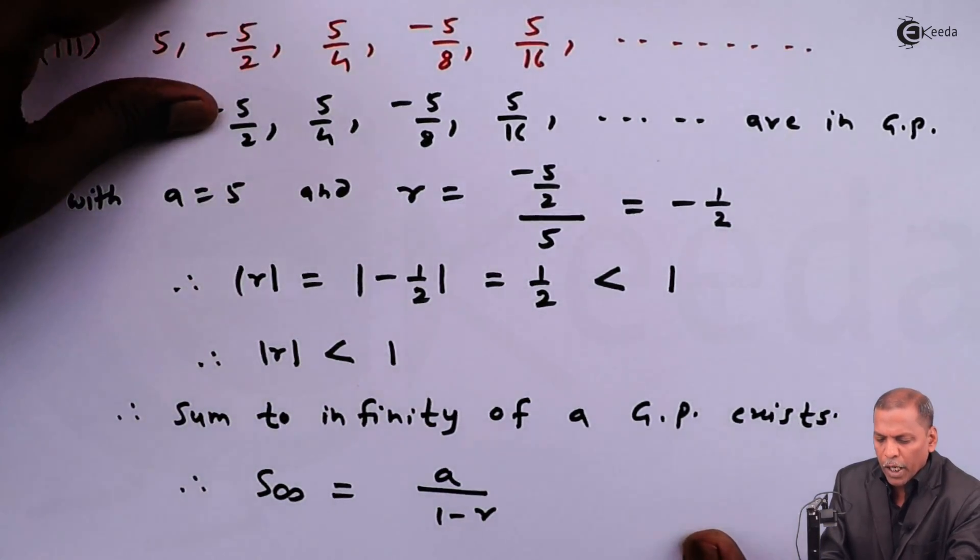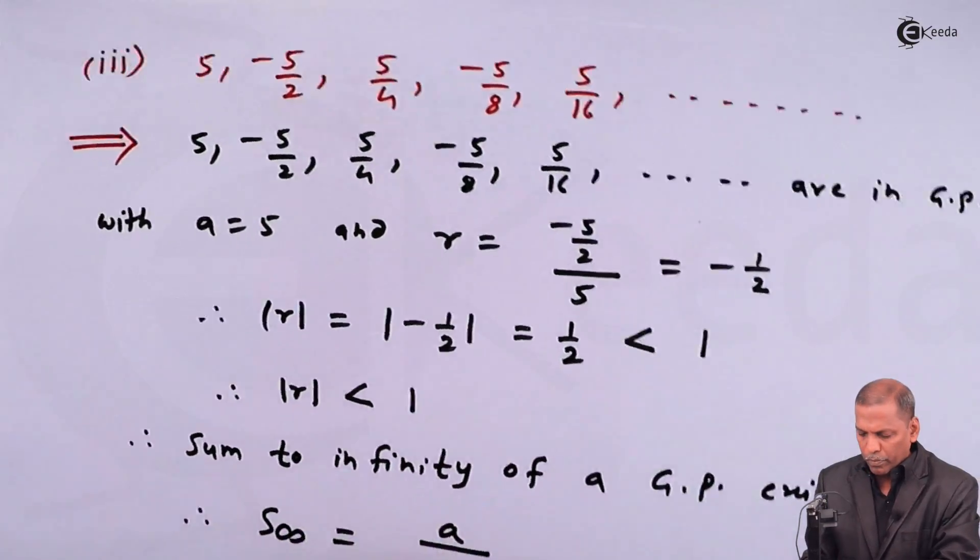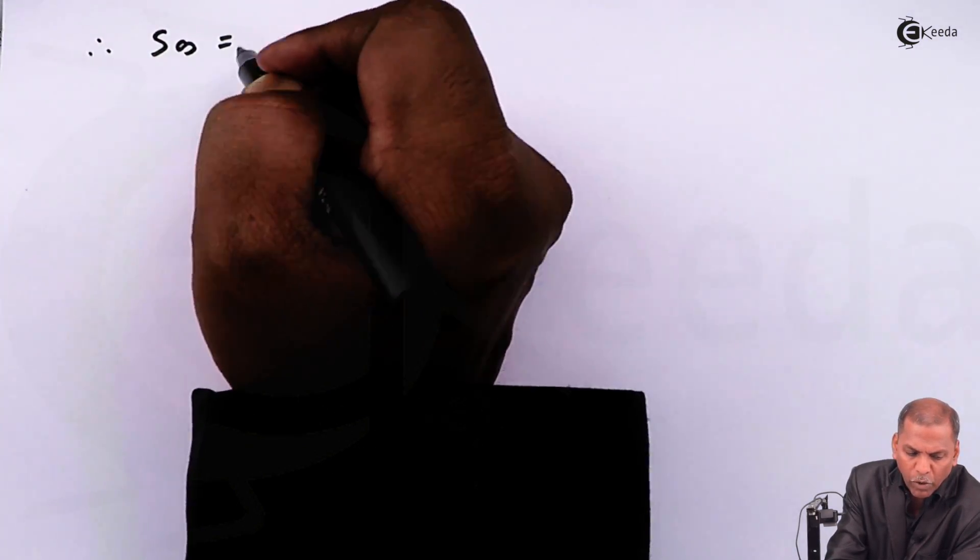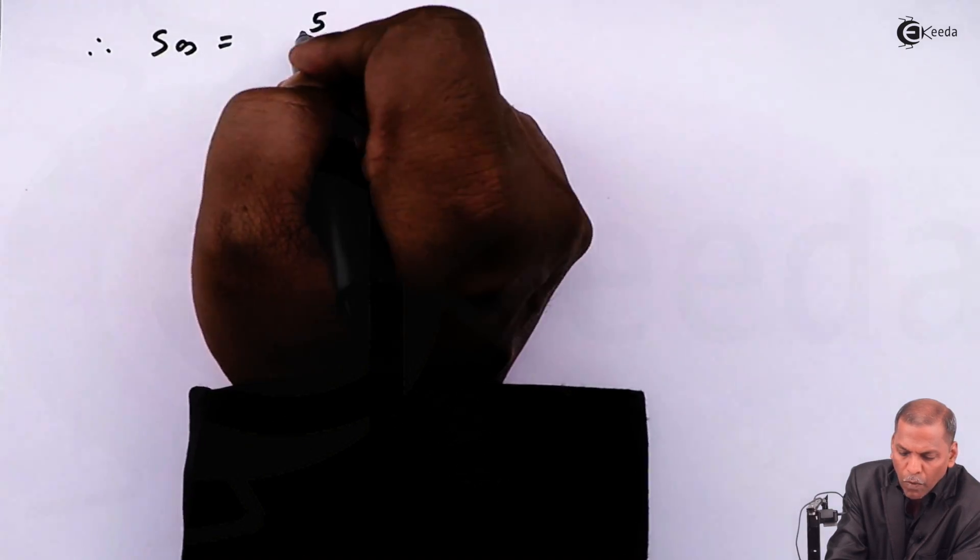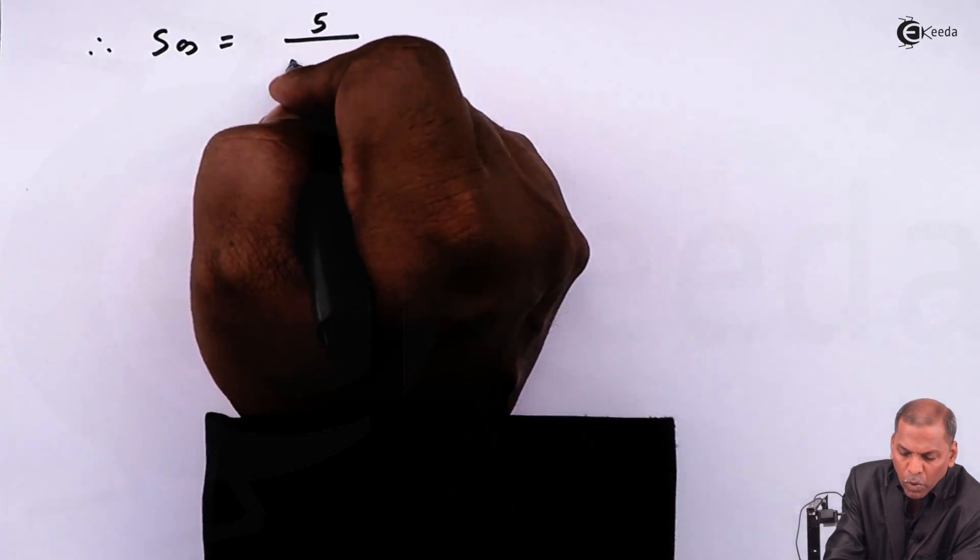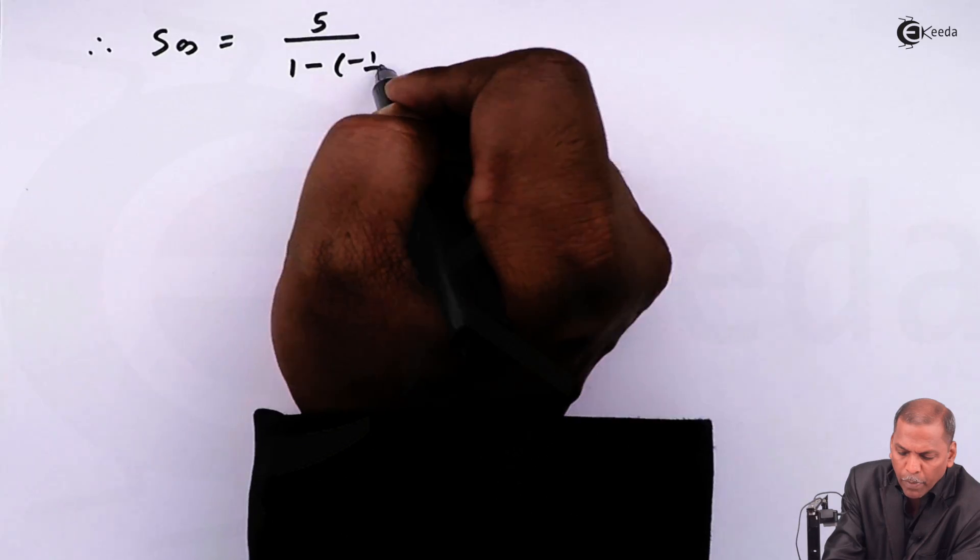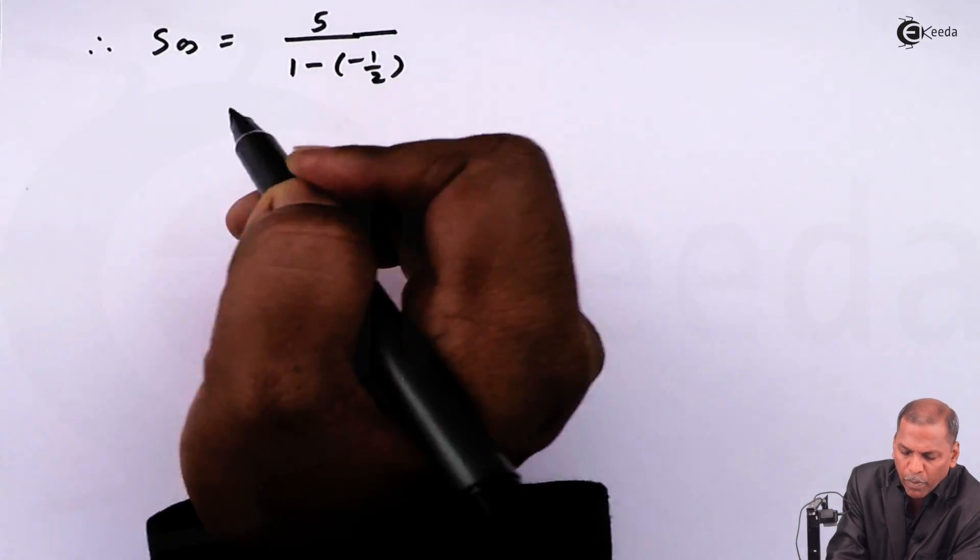Substituting the corresponding values, we get S∞ = 5/(1-(-1/2)).